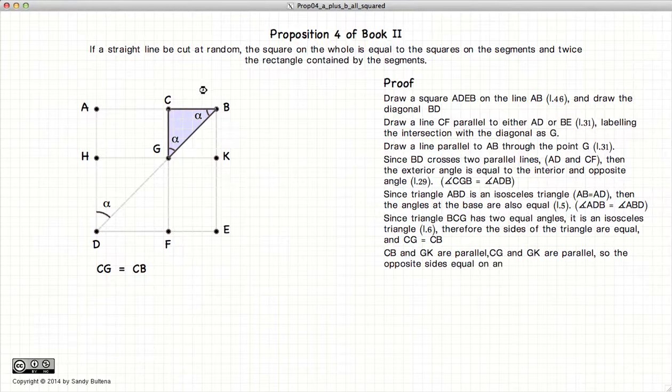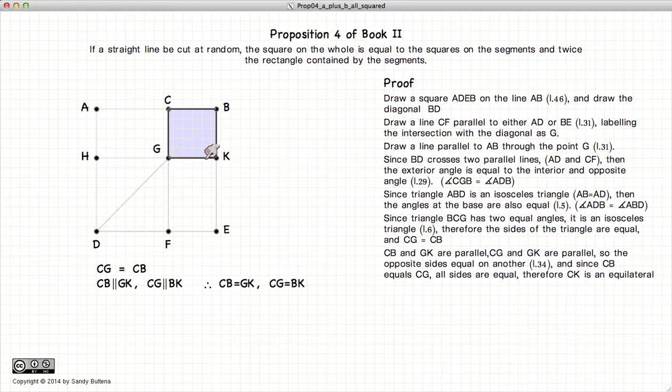Since we have a parallelogram, Proposition 34 tells us that opposite sides are equal. So CG equals BK, which equals CB. We have an equilateral.